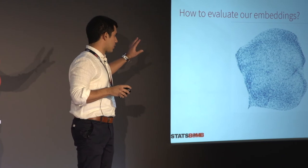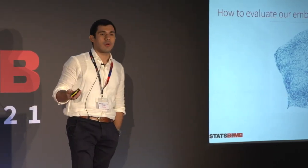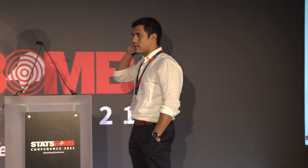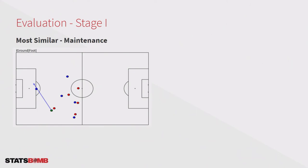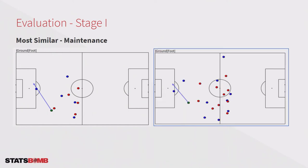It's important to mention that here I focus only on passes. Now that we have our embeddings, how do we evaluate them? The evaluation consists of two parts. In the first stage, I randomly select one action and ask the embeddings to tell me the most similar action. For example, when I ask for the most similar action to a pass to the keeper that can be considered as maintenance, the embeddings return this result. Note that both are passes to the keeper, and even though the first image has around 10 players and the second has around 20, the embeddings capture that the dynamics of the play are quite similar.